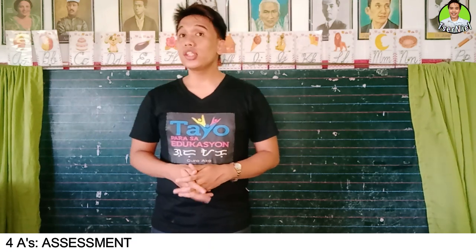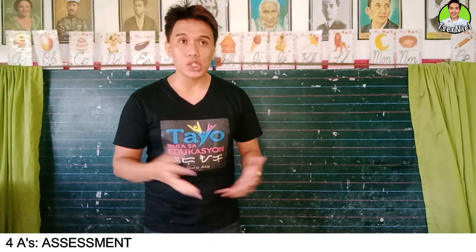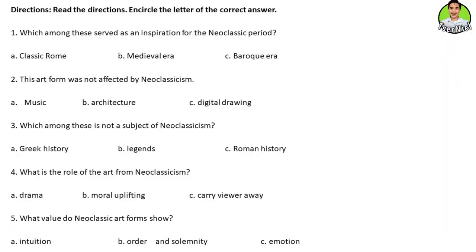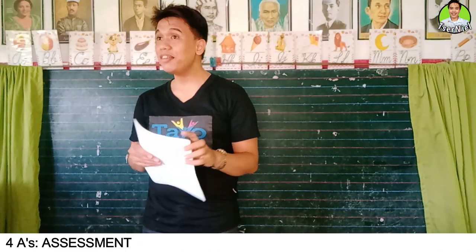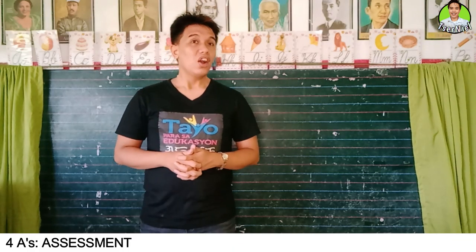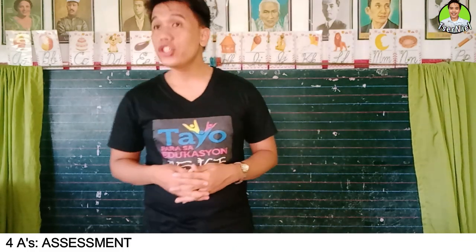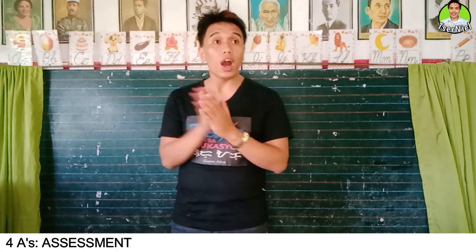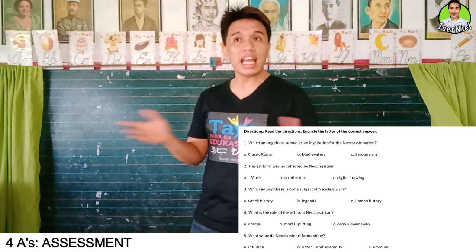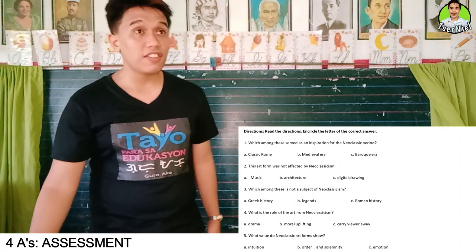In order for us to further understand our lesson, I will give you again another activity sheet. Read the directions carefully and encircle the letter of the correct answer. Is everybody finished? Clap five times — one, two, three, four, five. Now exchange your activity sheets with your seatmate and let us answer the activity sheet together.